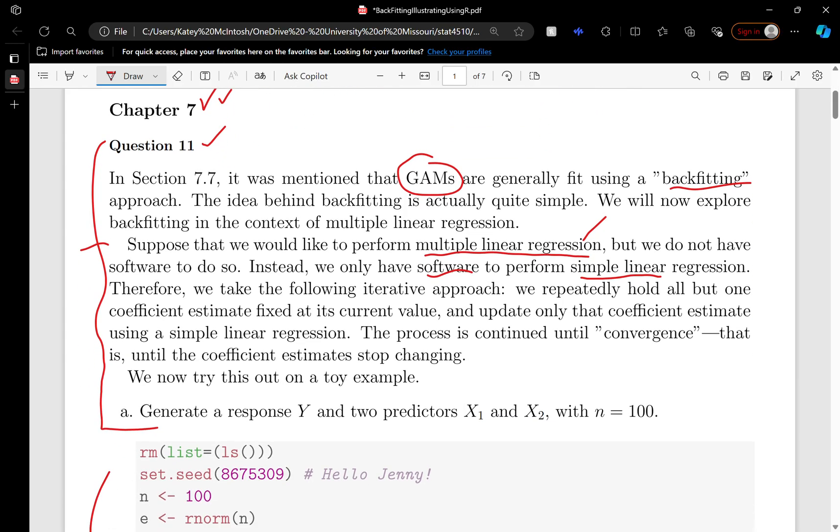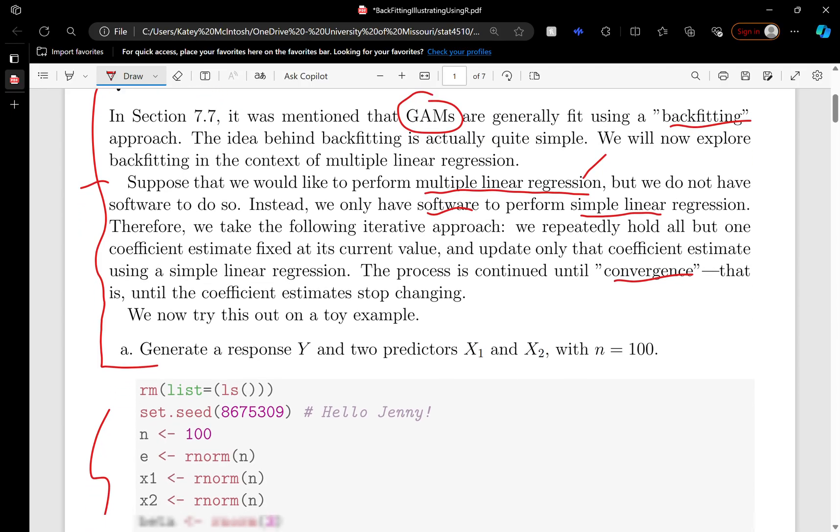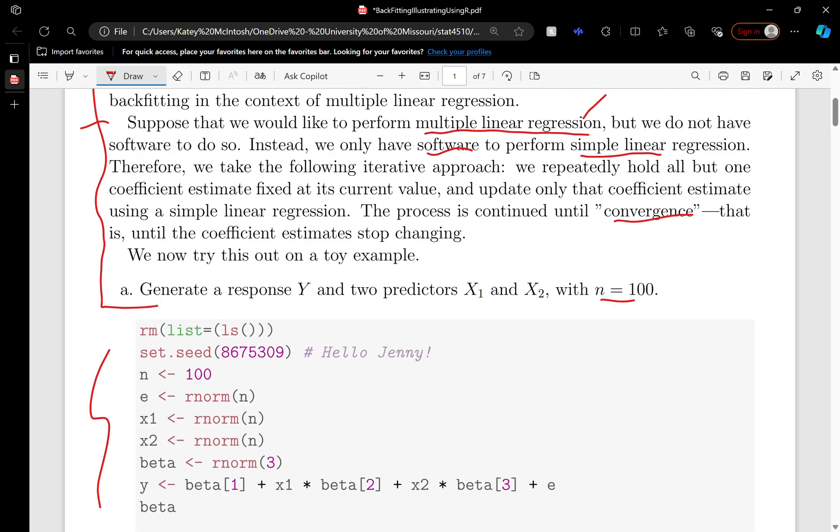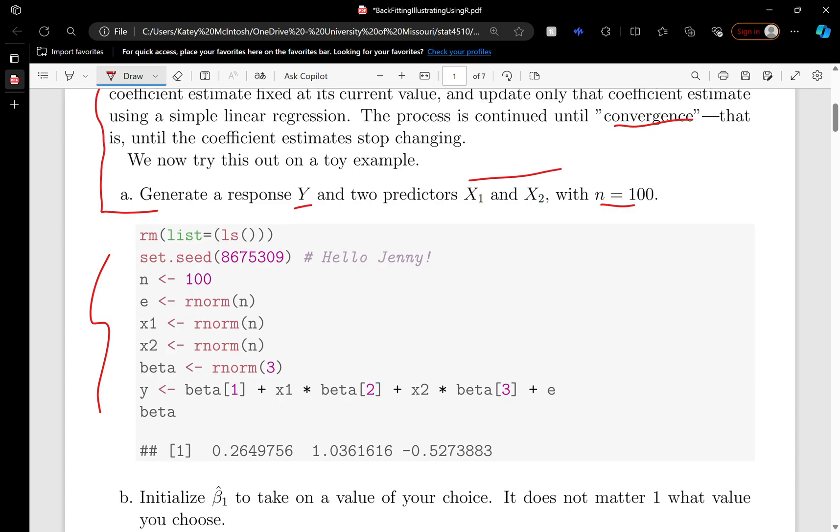It's an iterative process, so you're going to continue looping through these estimates and updating until some sort of convergence is obtained. In part A, it asks us to create 100 data points with two predictors and one Y variable.